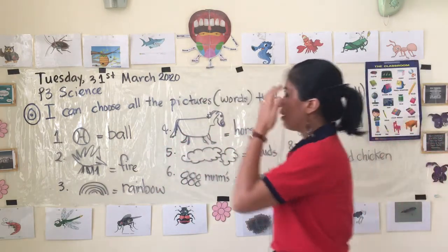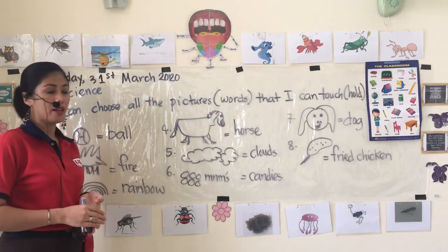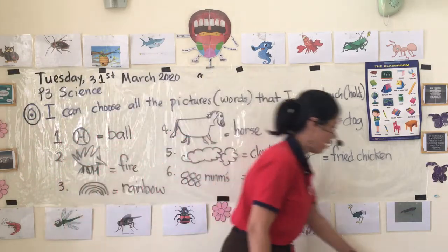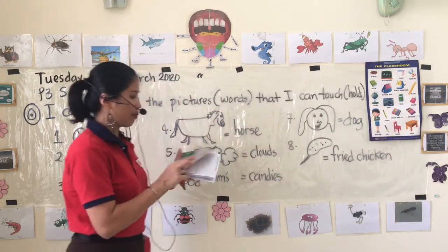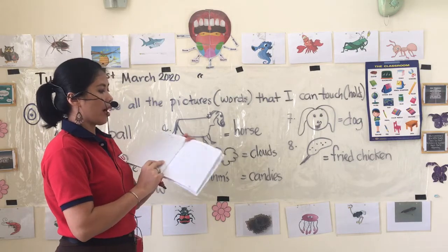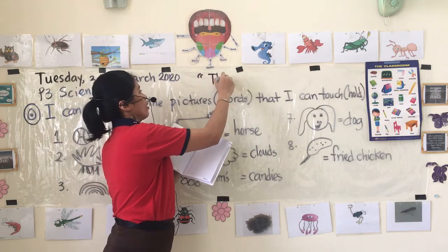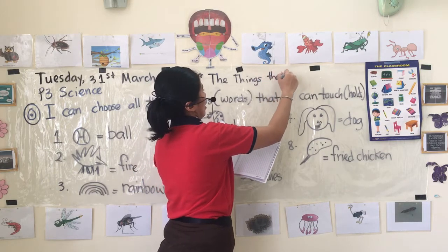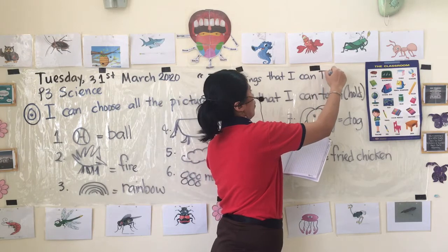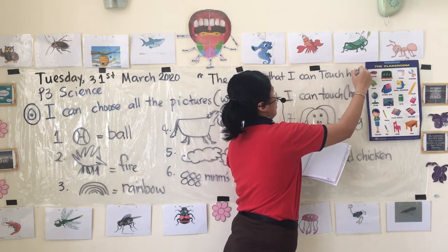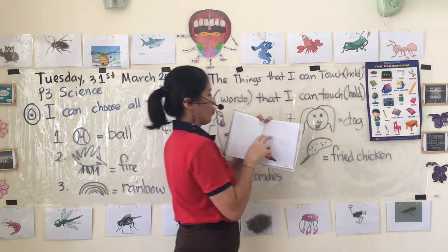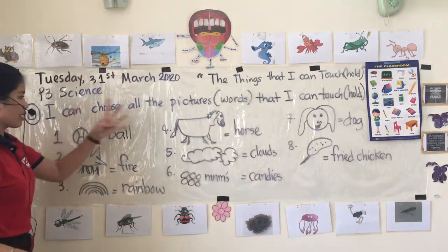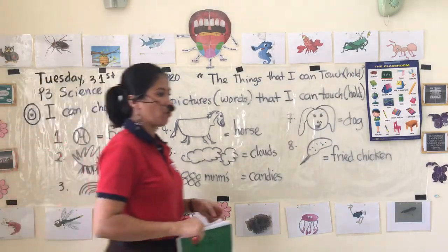Let's review the material I gave you last week. The assignment was that in your notebook you are going to write on the very top: 'The things that I can touch or hold.' I'll show you — if this is my science notebook, I'm going to write that title at the top. These are the things I asked you to choose and identify.